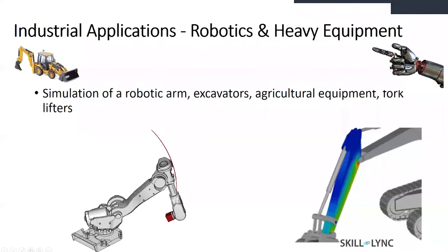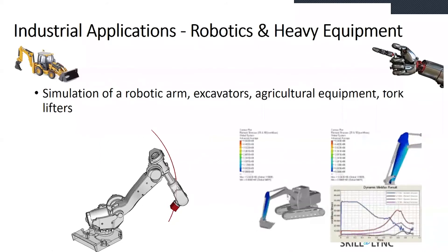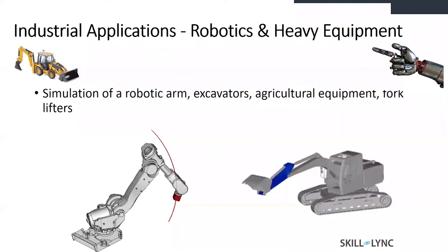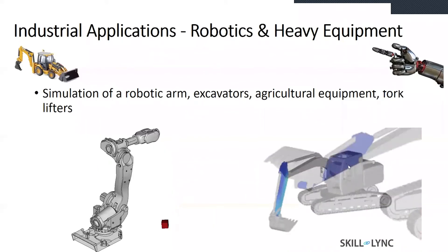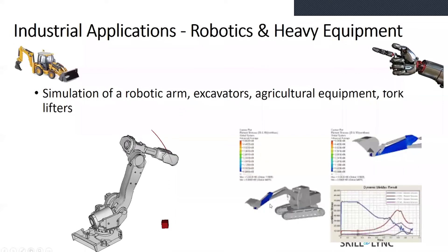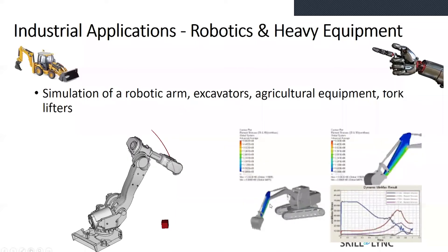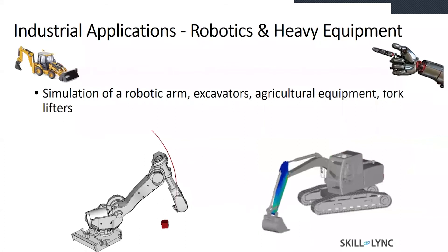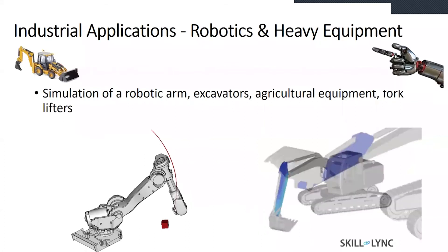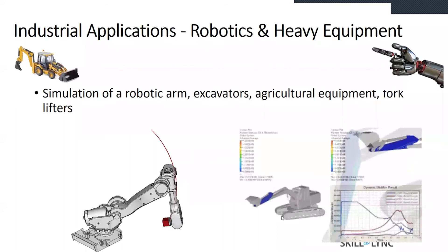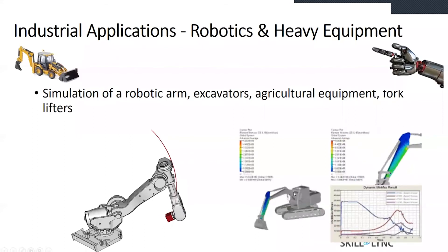We can also set up DOE — Design of Experiments — in MBD tools to perform sensitivity analysis, such as determining the proper length and width of the arm. If you want to change the design to make it more optimized, you can run DOE analysis within MBD itself to finalize the most optimum design for this particular model.